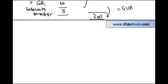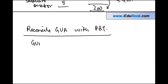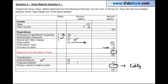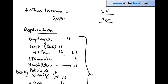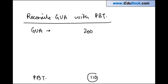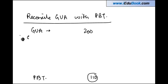The second part requires reconciling gross value added with profit before tax. Gross value added is 200 and profit before taxes is 110. While calculating GVA we do not deduct any of the six expense items discussed, but in order to calculate profit before tax you can deduct all items which are tax deductible. Let's see which are tax deductible.